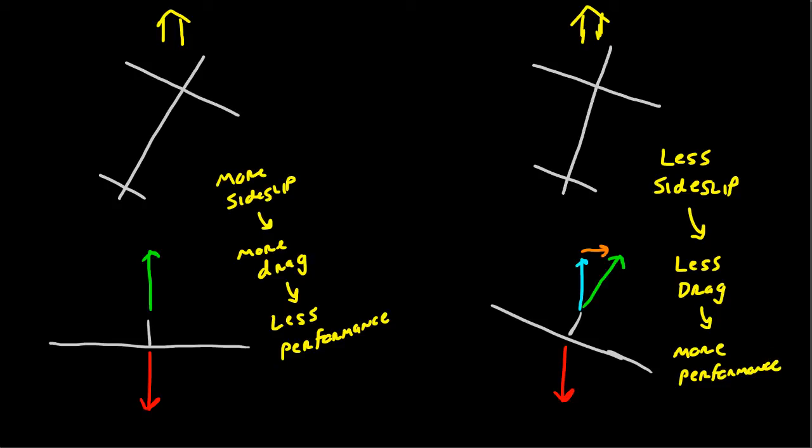So all of that in mind, if you don't bank, you'll get more sideslip, you'll get more drag, and therefore you'll perform worse. If over here you bank a little bit, three to five degrees, you'll get less sideslip, less drag, and therefore you'll get more performance. So that's the reason why you don't want to have zero bank. Zero bank is unacceptable; three to five degrees of bank is better.